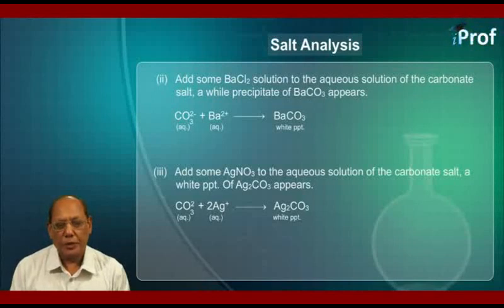The third test we can perform is add some silver nitrate to the aqueous solution of the carbonate salt. A white precipitate of silver carbonate appears. The reaction is carbonate ion plus 2 silver ion in aqueous medium to give Ag₂CO₃ that is a white precipitate.